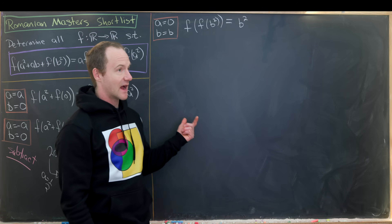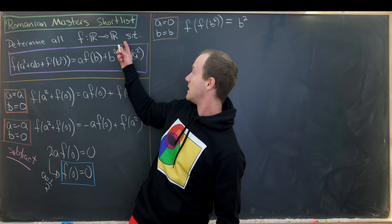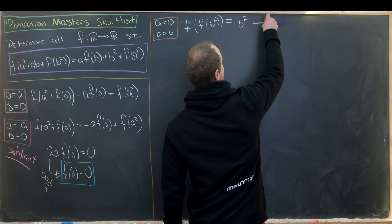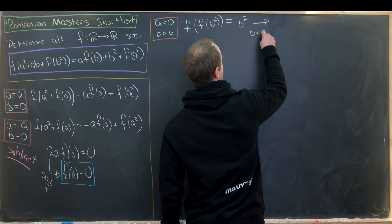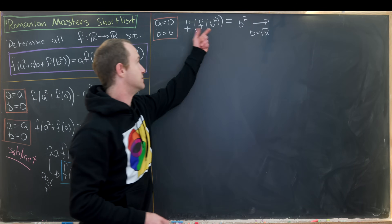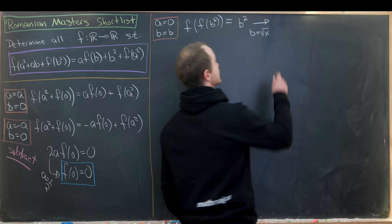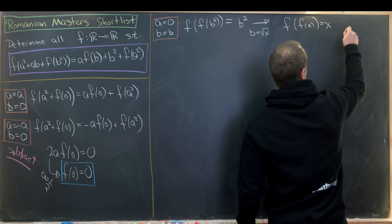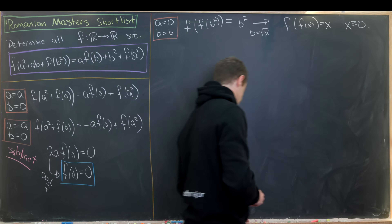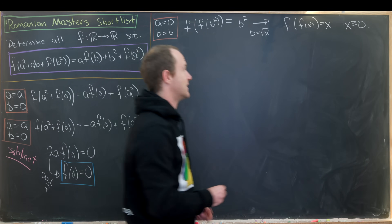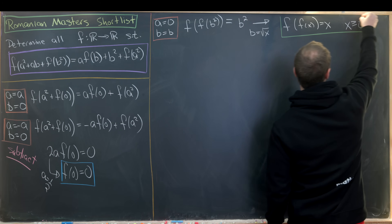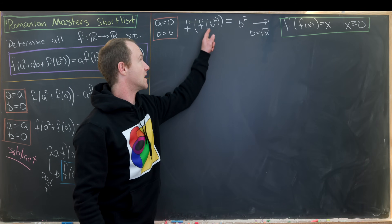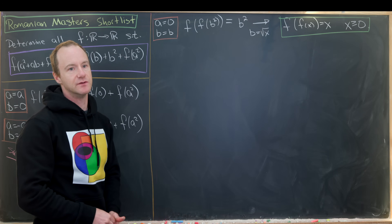Using the fact that every non-negative real number is the square of some non-negative real, we replace b with √x. That leaves us with f(f(x)) = x, valid for all x ≥ 0. We don't yet know if this holds for negative x — that's because we're only putting non-negative values into the function here.